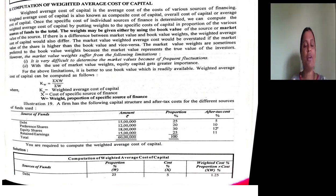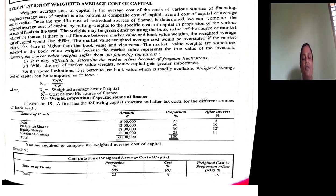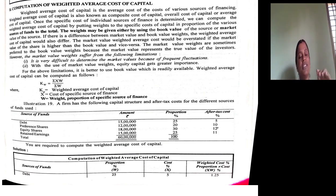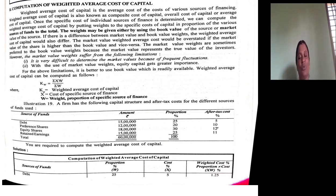Let me concentrate on the first problem. Sources of funds are given, amount is given, proportion is given, and after-tax cost is purely given. This concept of after-tax cost is applicable to debt only — both redeemable and irredeemable, secured and unsecured debt. So here the concept of after-tax cost applies to debt only. If they give before-tax cost for debt, you must convert it to after-tax. All other sources can be taken as given.